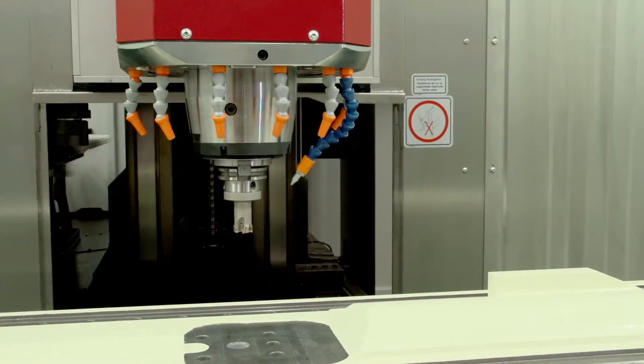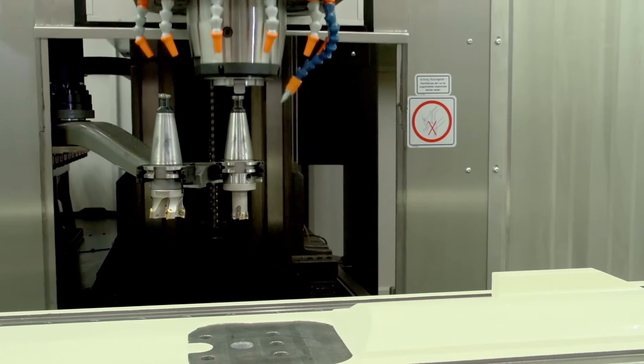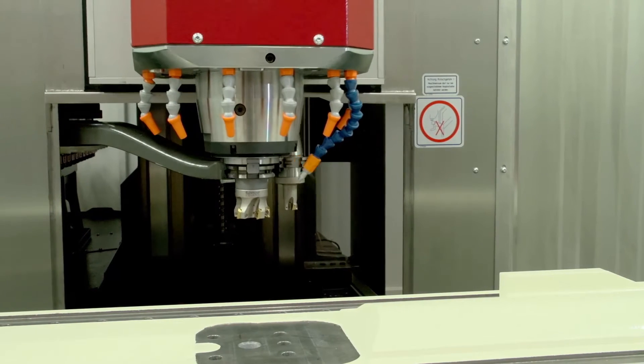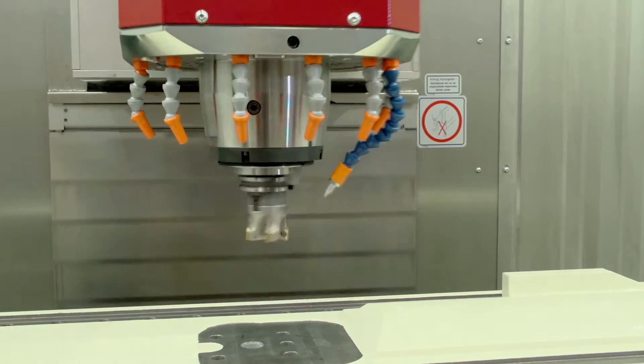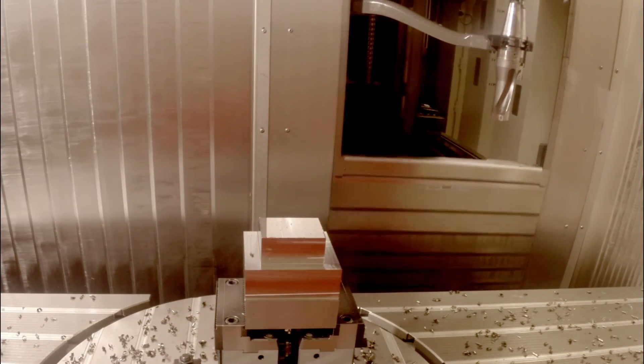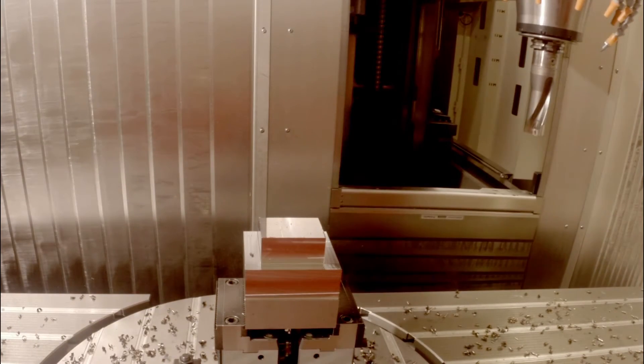The swivel arm tool changer, for which a patent has been filed, is located on the outside of the machine work area, protected from shavings and splashes by a stainless steel cover and guarantees a short chip-to-chip time.